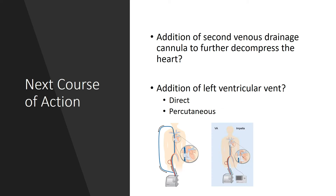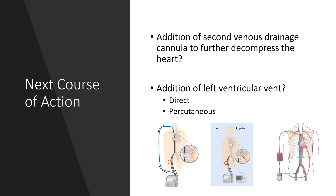Another solution for a distended LV on ECMO would be to directly vent out the ventricle itself. This could be achieved with either a properly placed Impella catheter or a standard LV vent used during cardiopulmonary bypass, which could be placed and integrated into the drainage side of the ECMO circuit. This true LV vent could be placed transapical, transseptal, or by cannulating the right superior pulmonary vein.